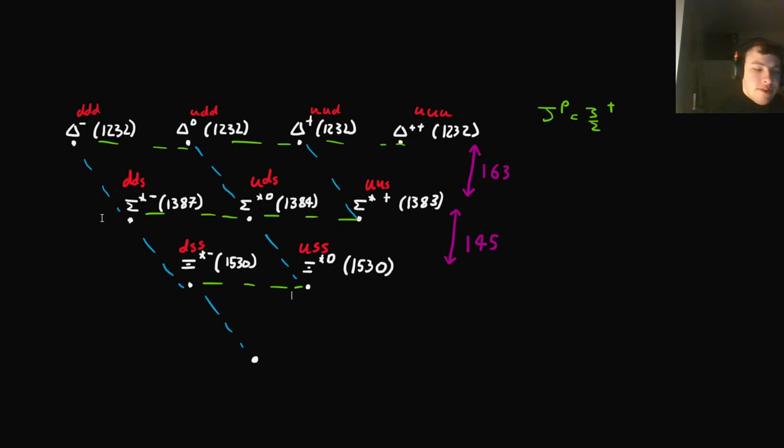So, Gell-Mann decided, well, there must be a missing particle, which he called the omega minus. It goes down here. It has a strangeness of negative three, sorry. Silly me. It would be three strange quarks. Then he noticed that the rows of the baryon decuplet have pretty much the same masses everywhere across the row.